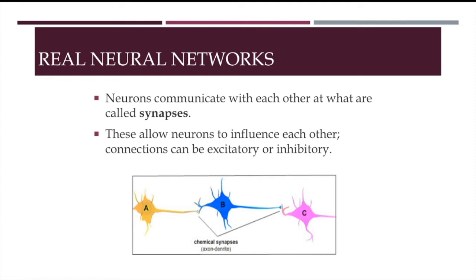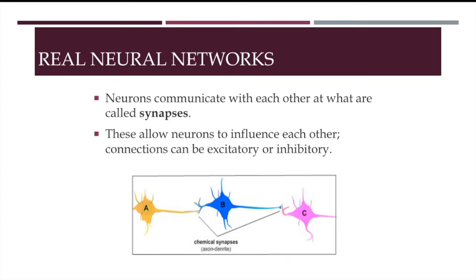Thus far, artificial neural networks haven't even come close to modeling the complexity of the brain, and nor do they need to, to do what they are supposed to do. Connectionist models are built on a series of assumptions, and there are two that are central.